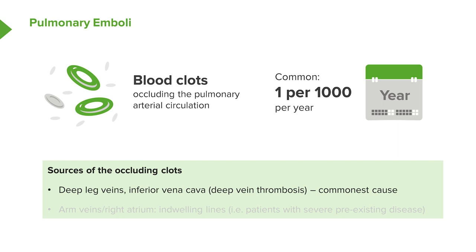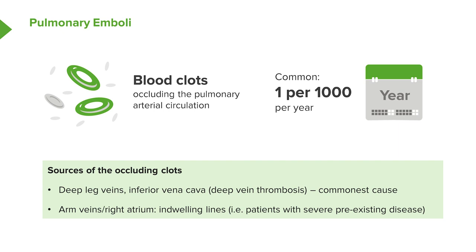Somebody who has a deep vein thrombosis with a clot in one of their leg veins — that clot can break off, move up the venous circulation, reach the right side of the heart, and then be fired into the lung. As the pulmonary arteries get smaller, it will eventually lodge and cause damage distal to where it's lodged. You can also get clots moving from the arm veins and the right atrium itself, but those are usually associated with indwelling lines — for example, a long-term catheter for intravenous antibiotics in cystic fibrosis, a pacing wire, or something similar, which allows a clot to form in a place where normally they do not form.